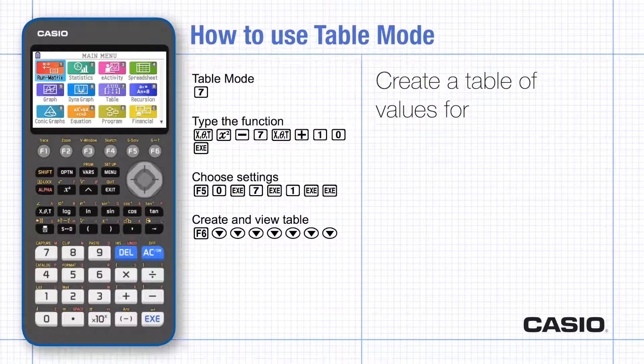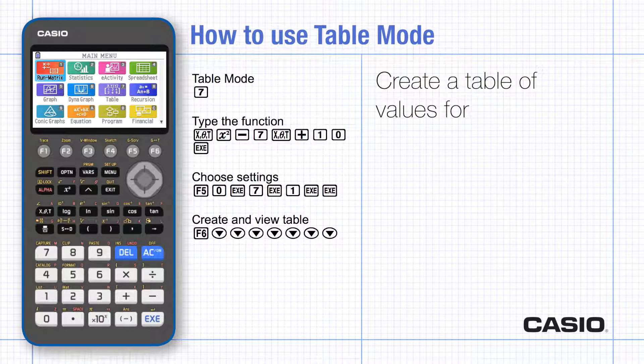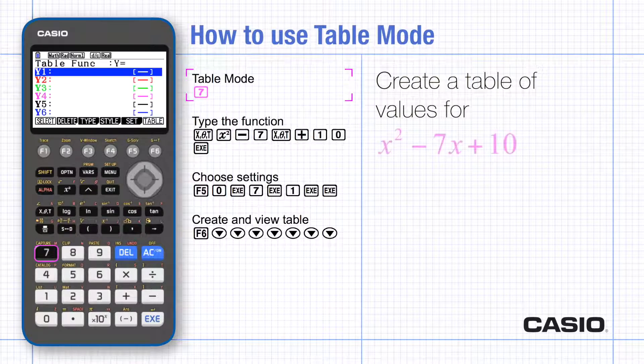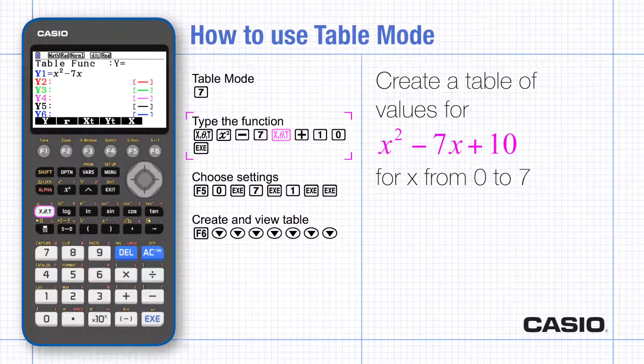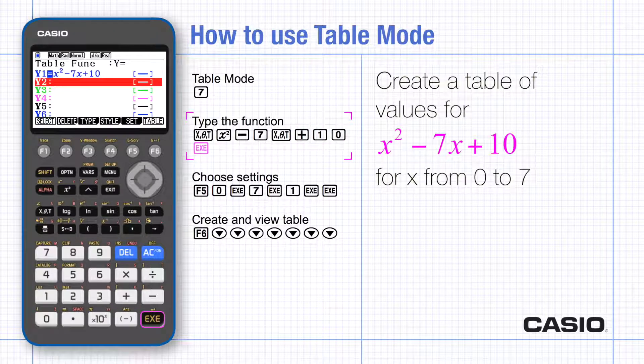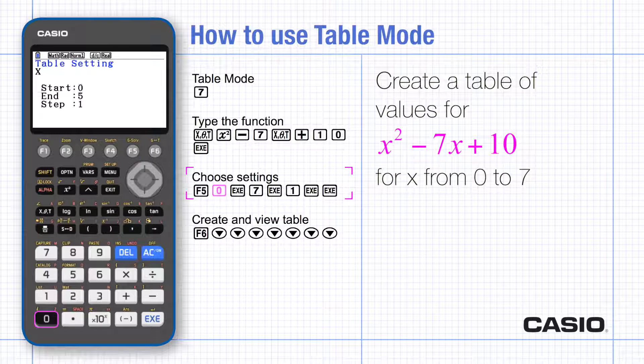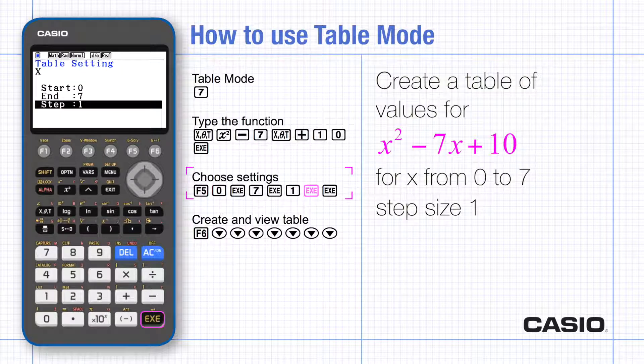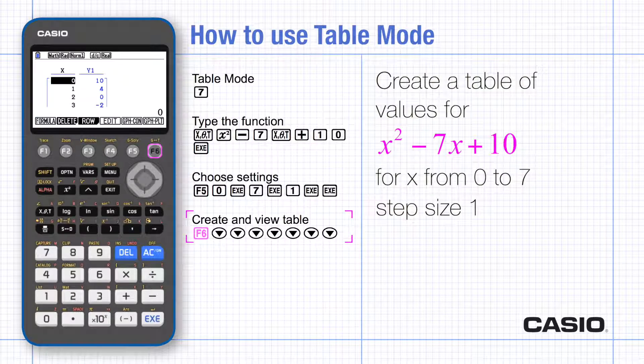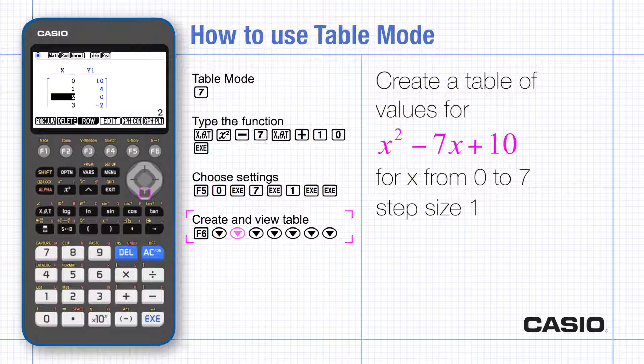So go to table mode and type in the function you want using the x theta t key for X. Press enter and then go to set to specify the lowest and highest values for X and the step size. Press enter to create the table and scroll down to see the rest of the values.